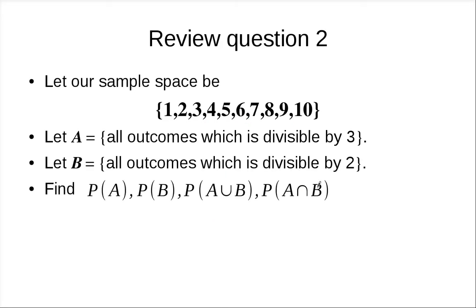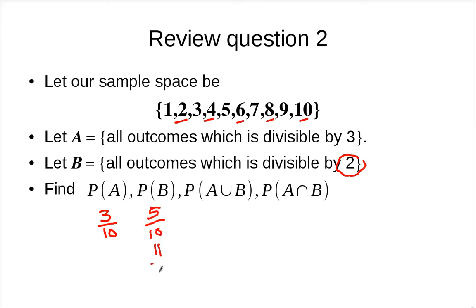Let's look at another review question. We have two events A and B. A is the event that you get an outcome divisible by 3, and B is the event that the outcome is divisible by 2. P(A) we already computed: 3 over 10. For P(B), count the outcomes divisible by 2 — that's 2, 4, 6, 8, 10 — so 5 over 10 = 0.5.